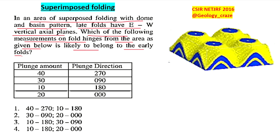Which one of the following measurements on fold hinges from the area as given below is likely to belong to the earlier fold? We have to find out the earlier fold data from the field area.